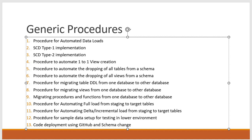Then a procedure for sample data setup in the lower environment for our code testing. Then I will show you how to do code deployment using GitHub and schema change — how to create your own GitHub account, how to check in your code to GitHub, and then using schema change, how you can migrate or deploy this code to the higher environment.